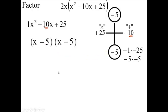So you end up with 2x, which we already factored out, and you write the x - 5 twice, or (x - 5)².